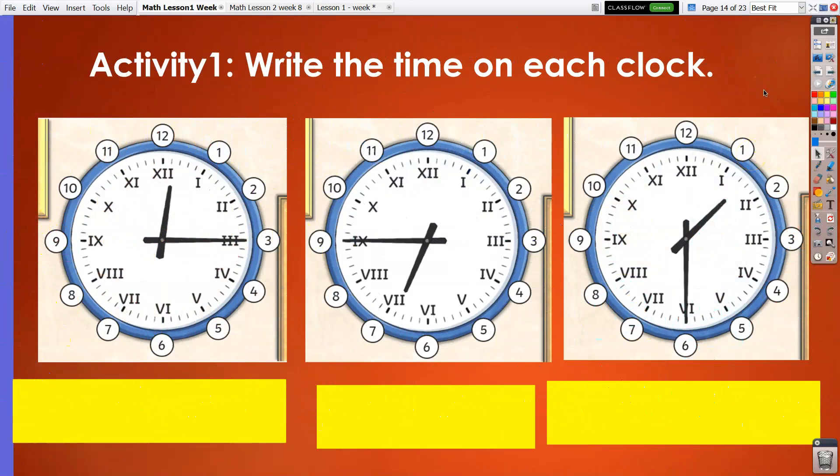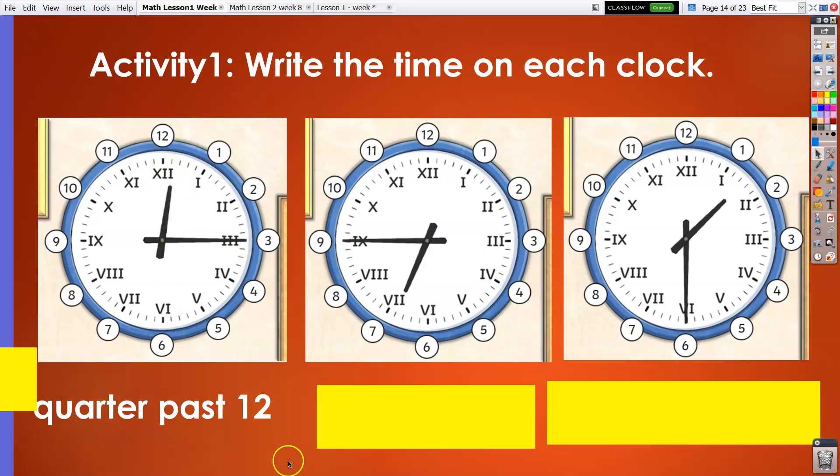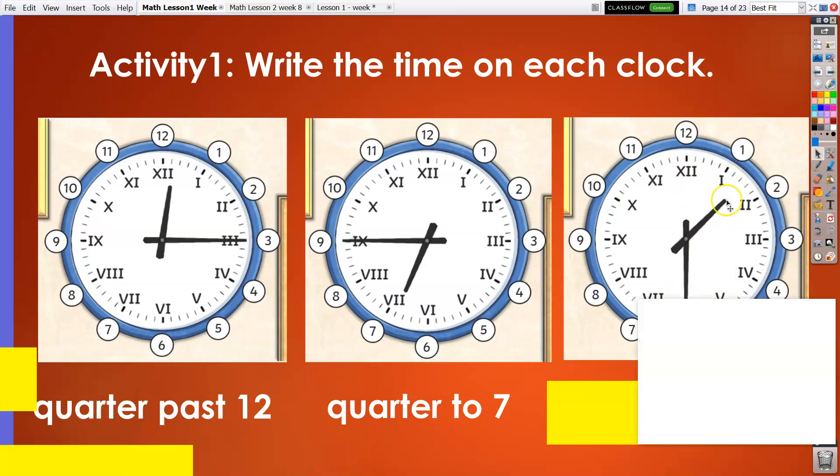Now it's your turn. Write the time on each clock. Pause the video and write your answers. Time is up. Now let's reveal the answers. For the first clock we have quarter past twelve. The second clock, we have two hours, so we have quarter to the next hour, which is seven. And the third clock we have half past one.